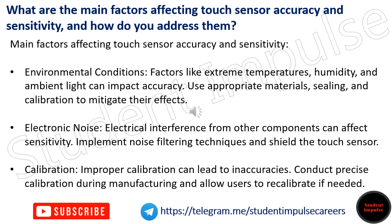What are the main factors affecting touch sensor accuracy and sensitivity, and how do you address them? Environmental conditions such as extreme temperatures, humidity, and ambient light can impact accuracy — use appropriate materials, sealing, and calibration to mitigate their effects. Electronic noise from electrical interference from other components can affect sensitivity; implement noise filtering techniques and shield the touch sensor.